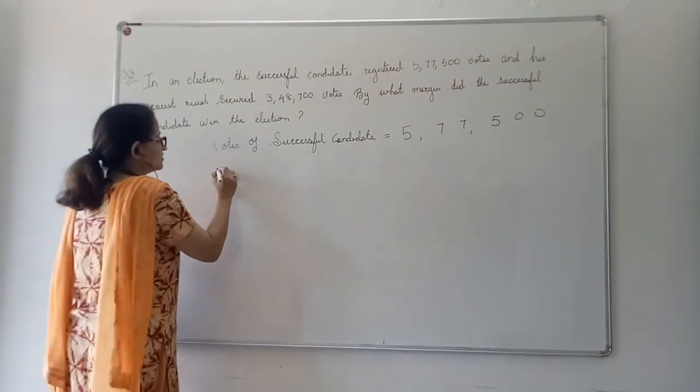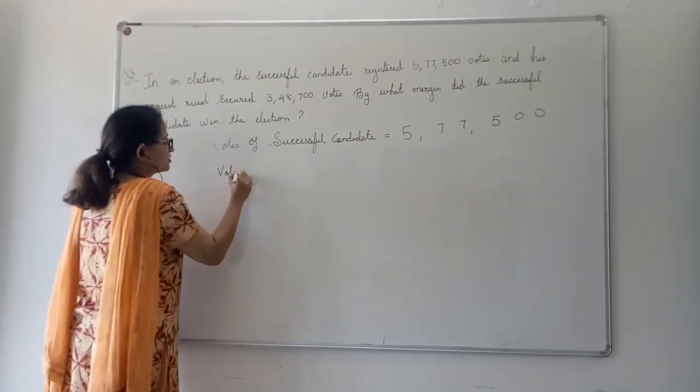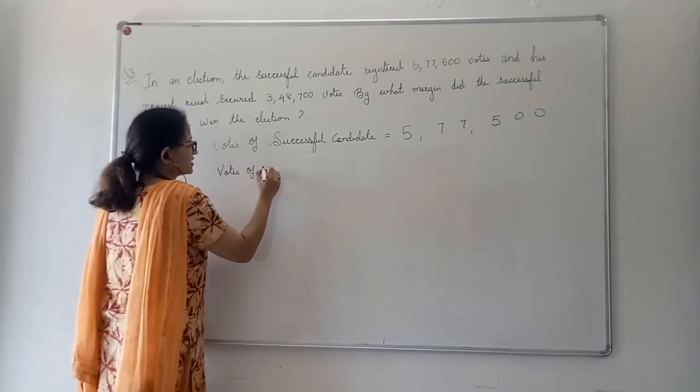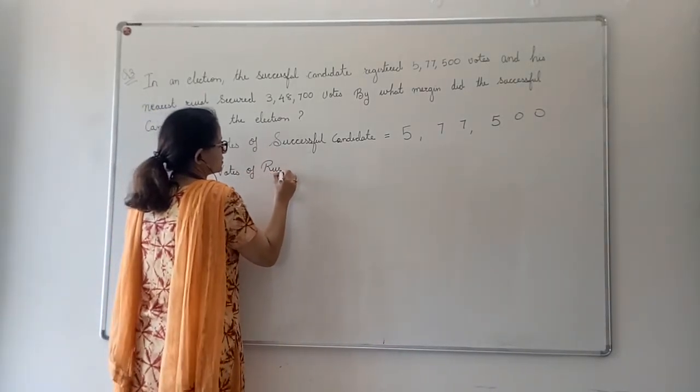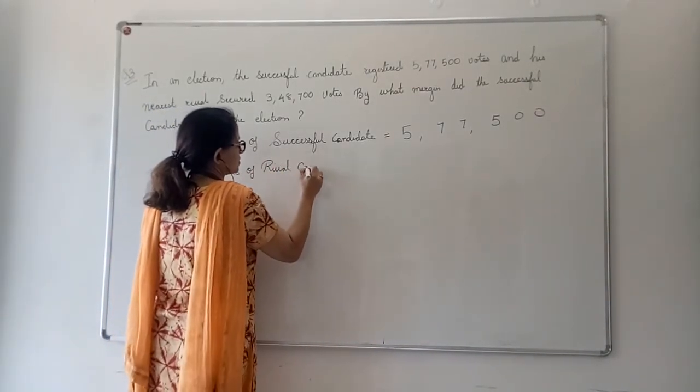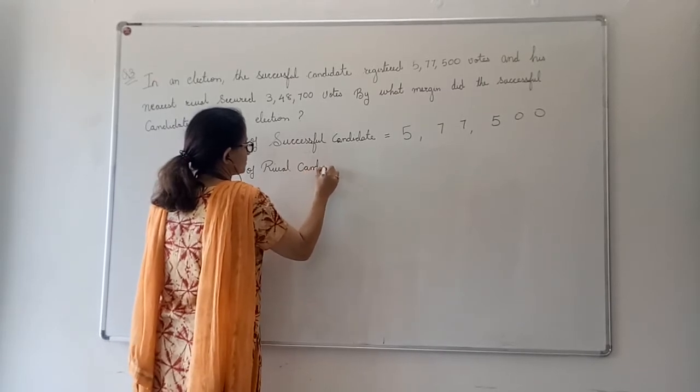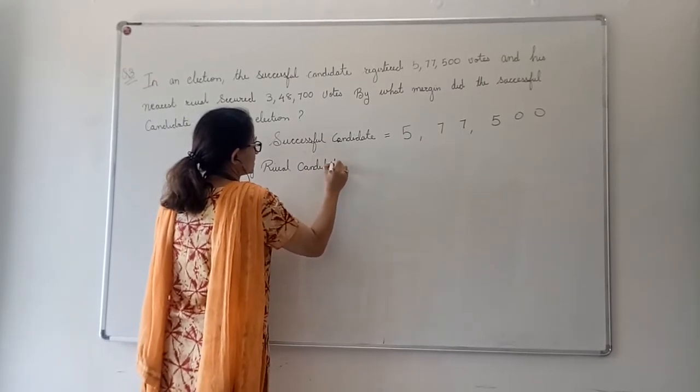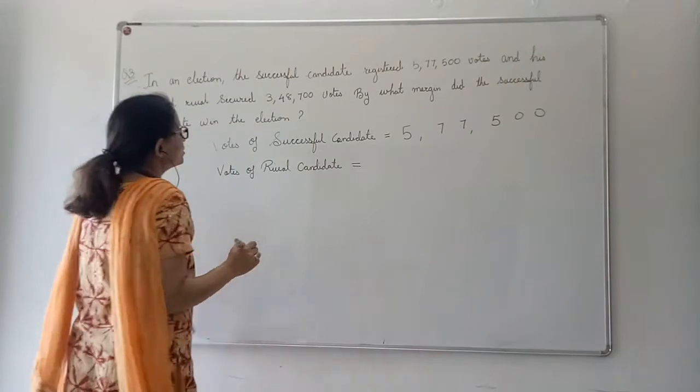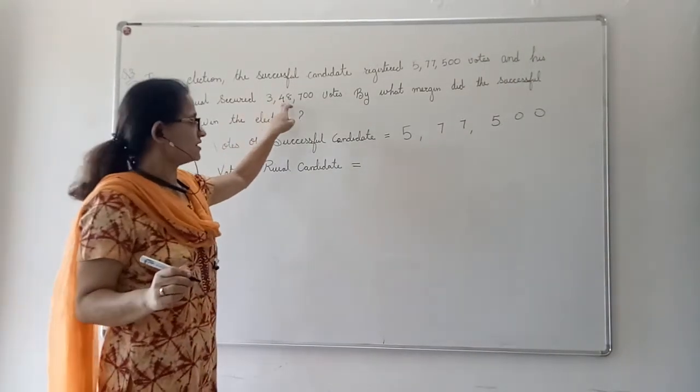On the next line, we will write votes of rival candidate. How much did the rival candidate get? 3,48,700.